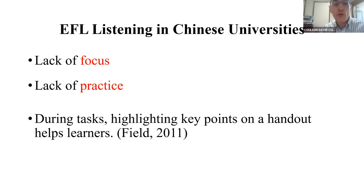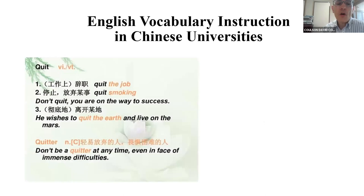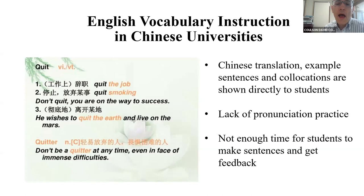She claimed that in China there's a lack of focus on listening and a lack of practice; they strongly emphasize reading activities. In her previous research, she found work by people like John Field highlighting keywords on a handout — margin glosses are effective. In China they have a very visually-based approach to vocabulary learning, and there's a lack of auditory input and awareness of how words are pronounced.